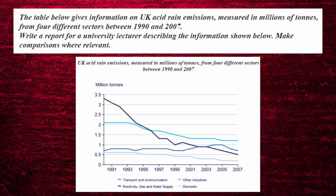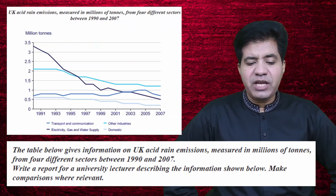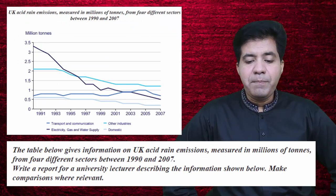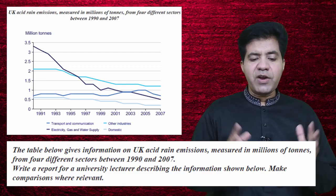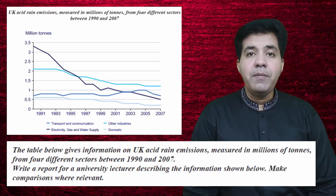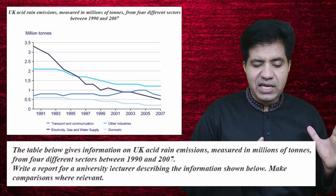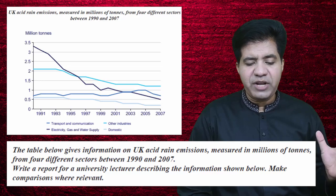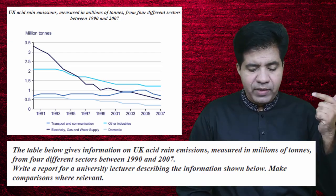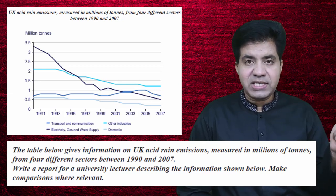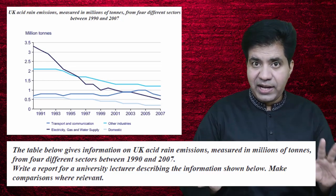We are going to read and critically evaluate a report. The topic is in front of you — I give you a few seconds to take a look at it. The table below gives information on UK acid rain emissions measured in millions of tons from four different sectors between 1990 and 2007. Write a report for a university lecturer describing the information shown and make comparisons where relevant. The four sectors are: transport and communication, electricity gas and water supply, other industries, and domestic.